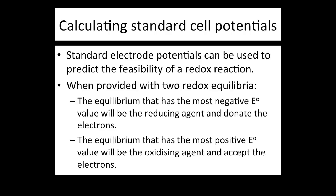We saw this in the previous lesson with the table of standard electrode potentials. It is not possible for both reactions to accept electrons — one half cell must be flipped so it releases electrons. It makes sense that this is the half cell with the more negative or least positive electrode potential that is flipped and donates electrons.